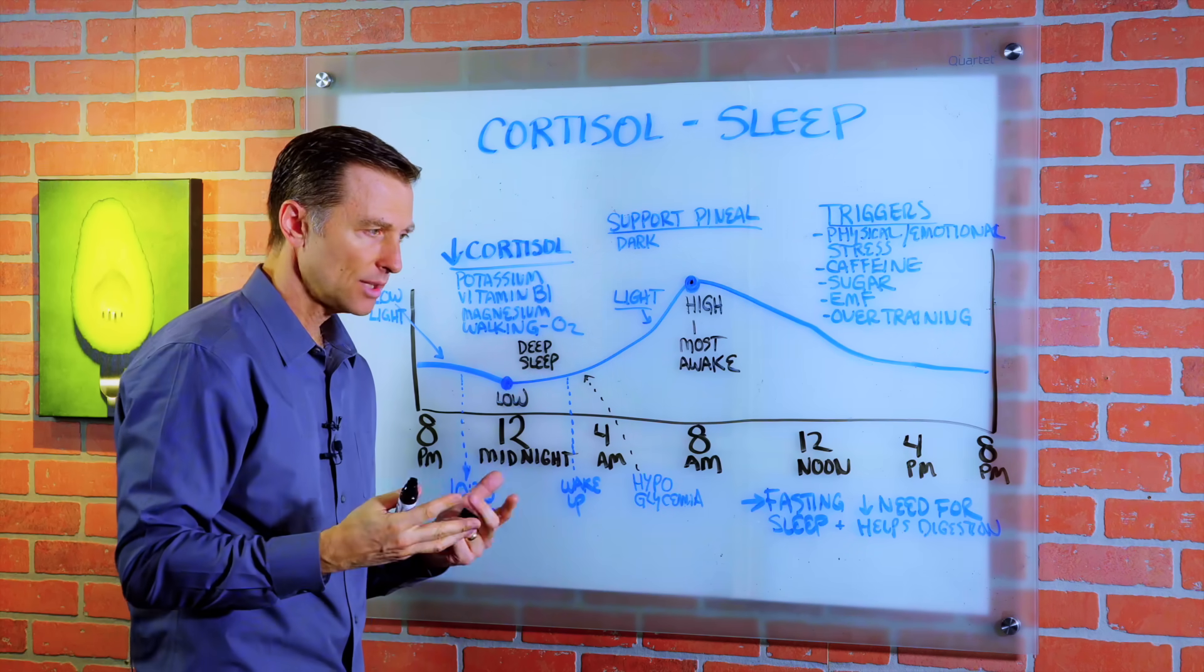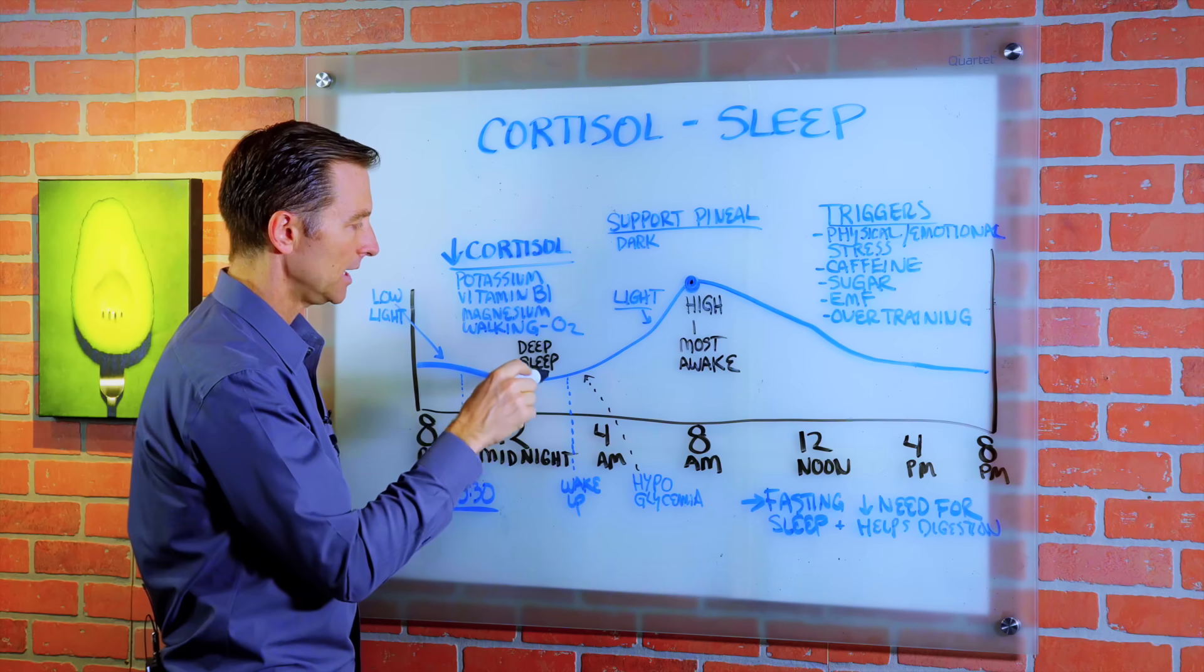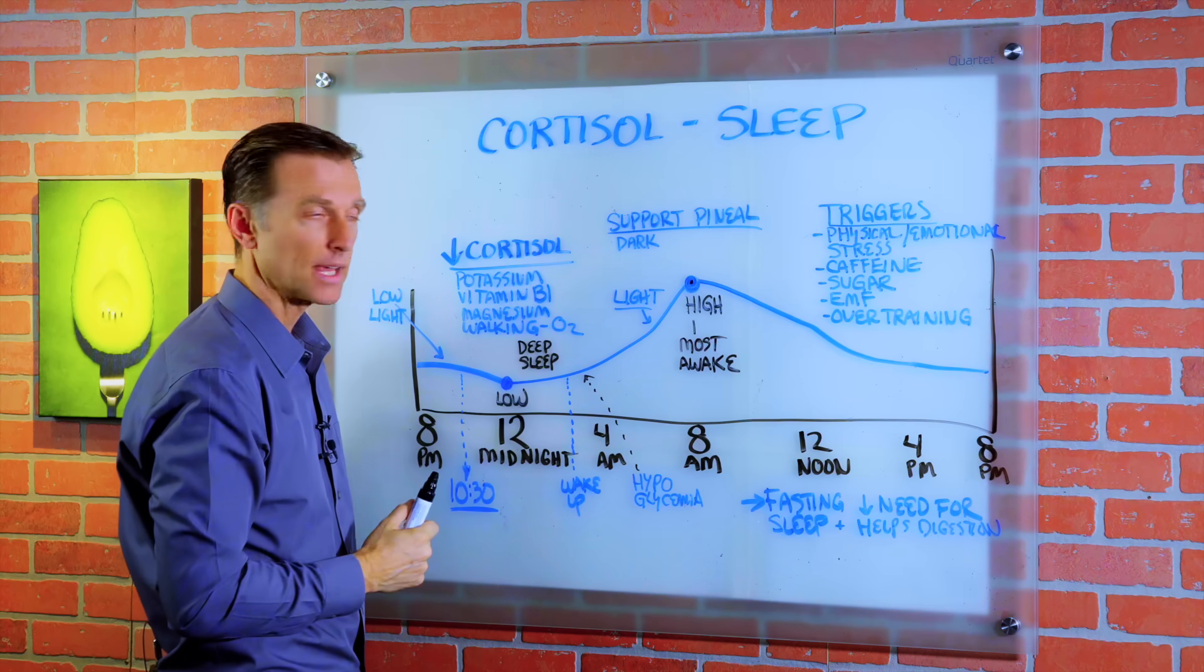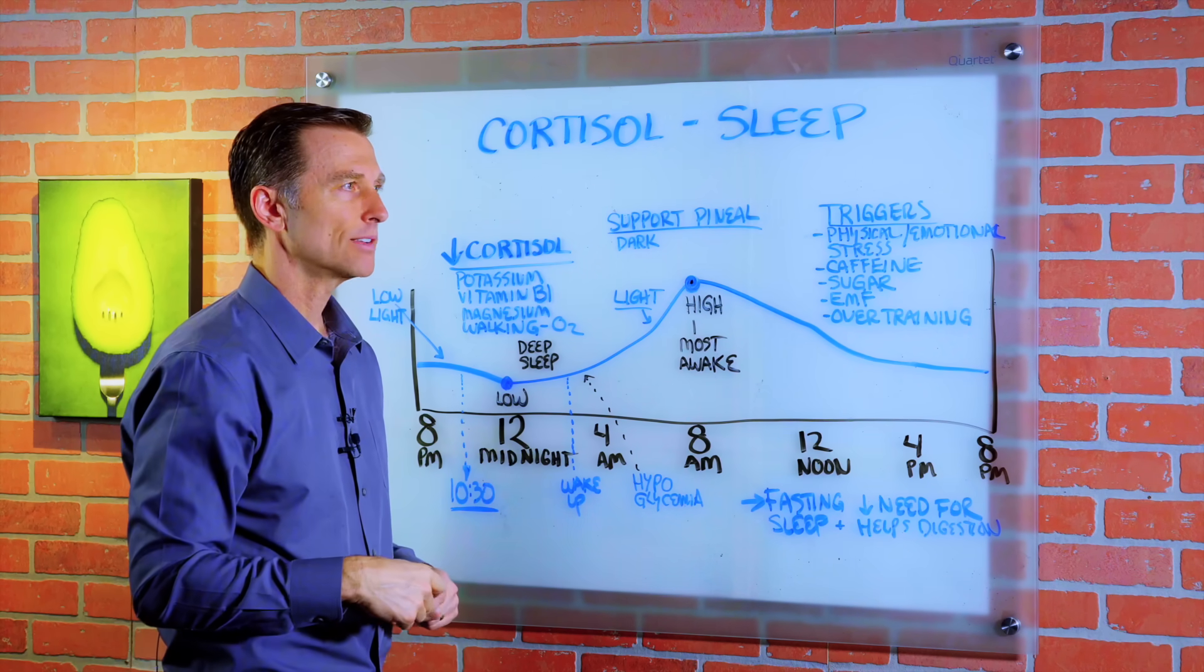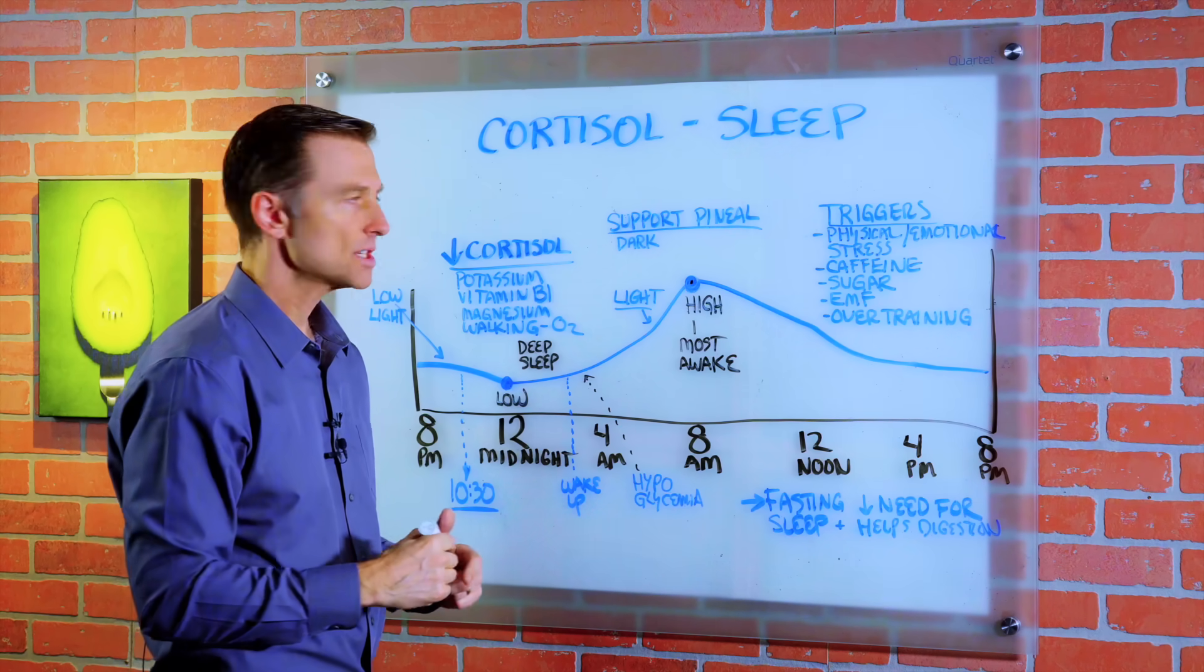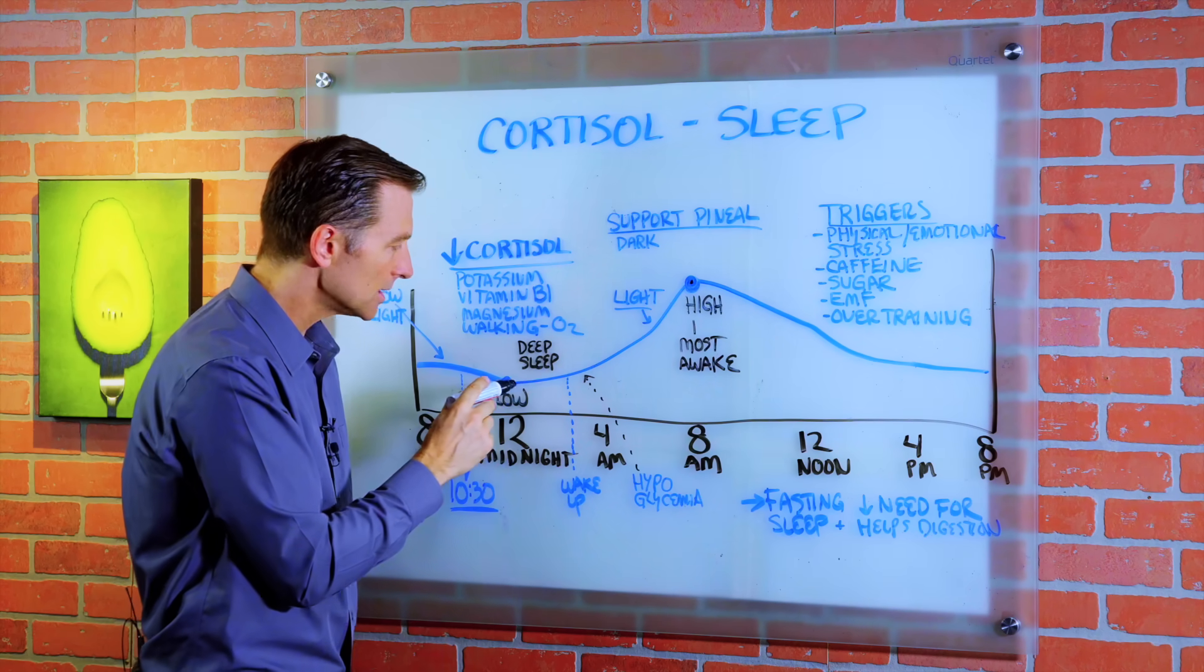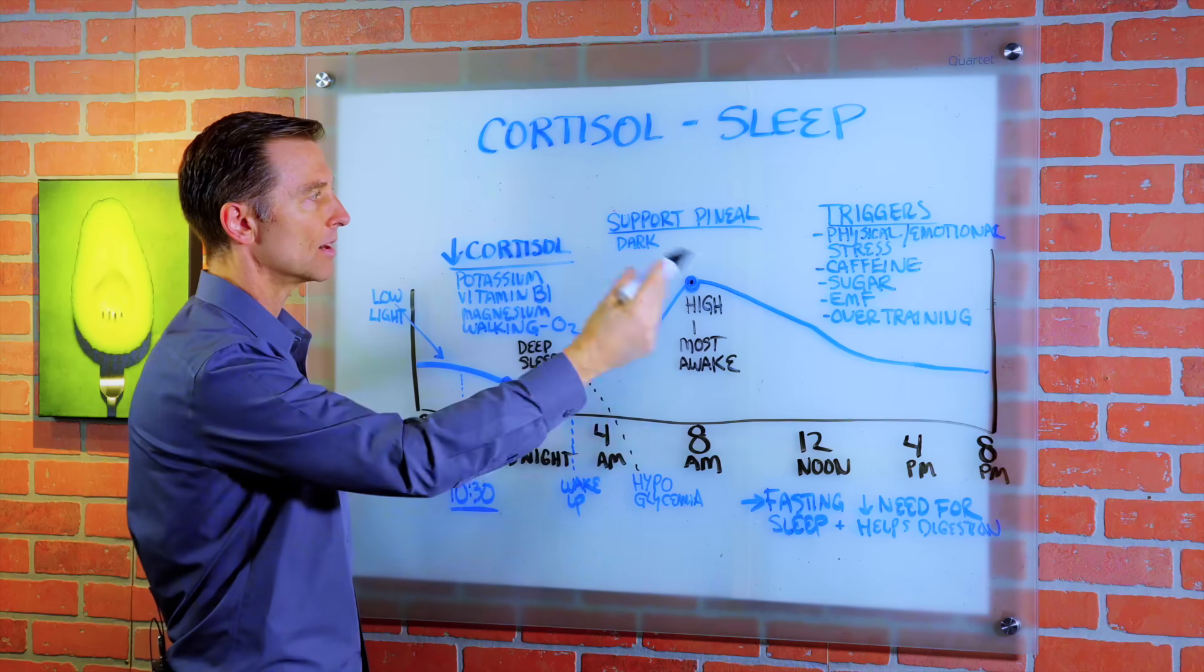If these circadian waves are out of whack, you could have high cortisol in the middle of the night and low cortisol in the morning. And so that's a situation where in the morning is like your best sleep. Just when the alarm clock goes off, that's when you really want to go to sleep. Yet at two o'clock in the morning or 12, you're like wide awake, ready to go. That's because your circadian waves are off.